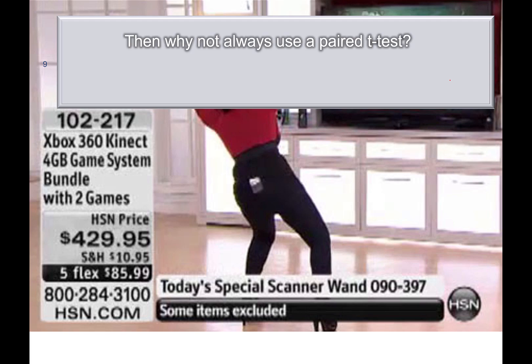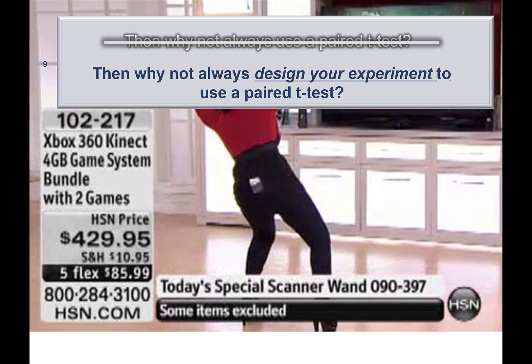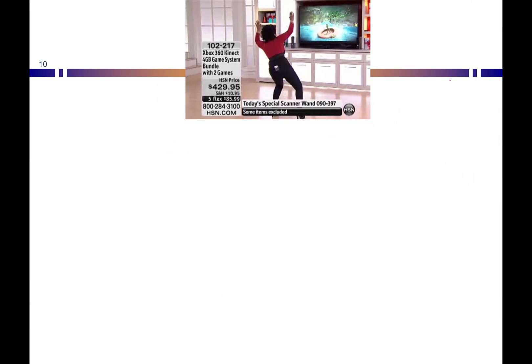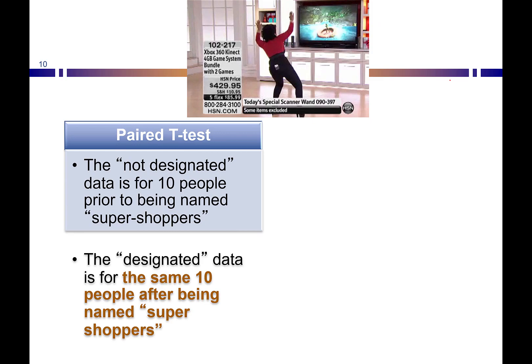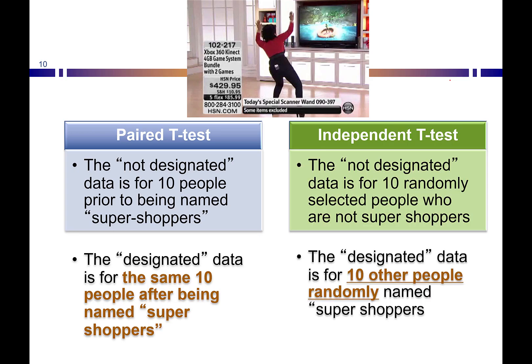Why not always use a paired t-test if it's likely to give a lower p-value? A big reason is the experiment wasn't designed for it. Why not always design your experiment for a paired t-test? For the paired design here, we had 10 people measured before and after being named super shoppers. For an independent samples design, the non-super shopper data would be from 10 randomly selected people and the super shopper data from 10 different people — 20 people total, each measured once, versus 10 people each measured twice.